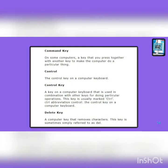Command key: on some computers, a key that you press together with another key to make the computer do a particular thing. Control: the control key on a computer keyboard helps you control different functions of the computer operations. A key on a computer keyboard that is used in combination with other keys for doing particular operations. This key usually marks CTRL. Delete key: a computer key that removes characters, sometimes simply referred to as DEL.